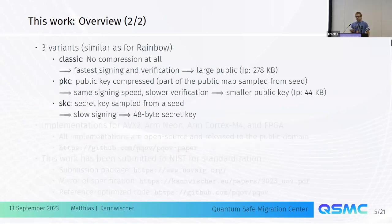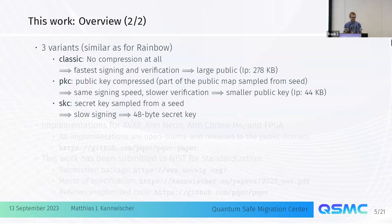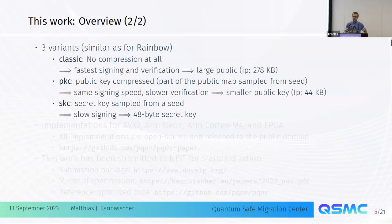We propose three variants. One is called Classic, with no compression at all, which gives the best performance for signing and verification but has a huge public key — at security level one, a 280 kilobyte public key, which is quite big.